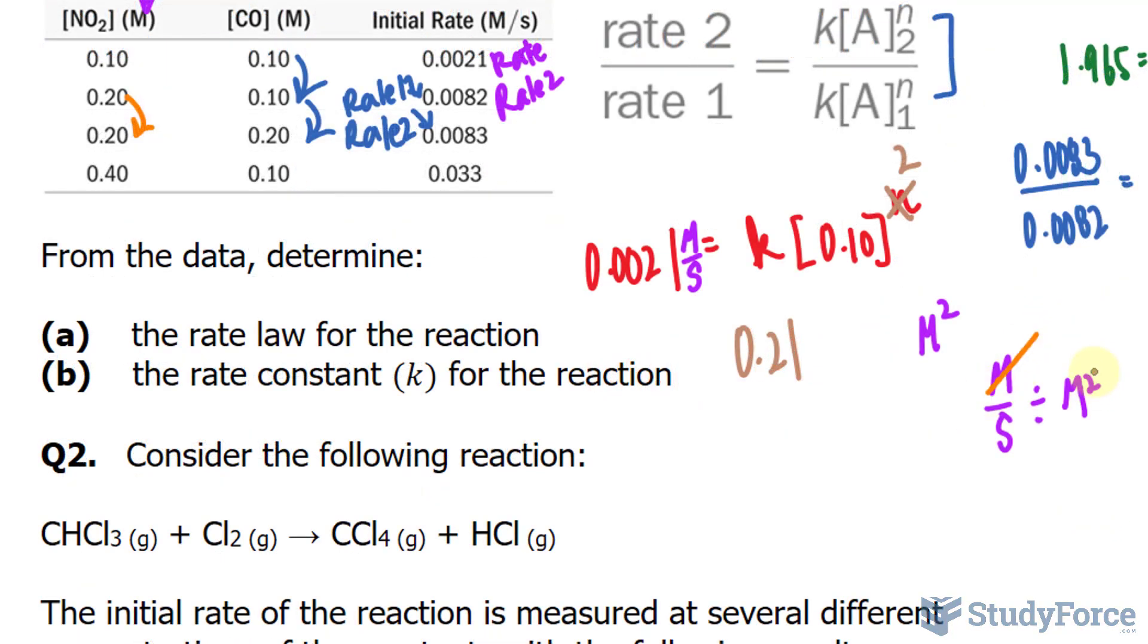We reciprocate the second number, and we end up with 1 over M times s. And those are the units for the rate constant.